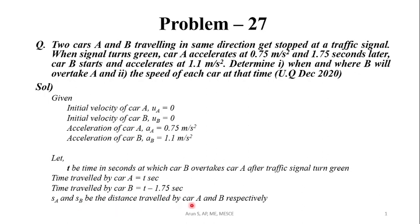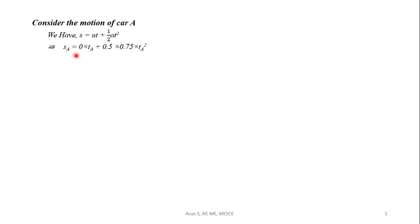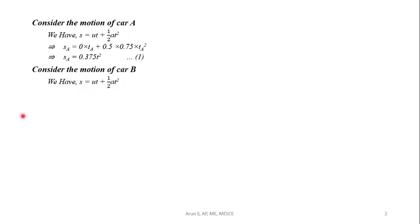Let S_A and S_B be the distances travelled by car A and car B respectively. For car A, using s = ut + ½at²: S_A = 0 × T + 0.5 × 0.75 × T², which simplifies to S_A = 0.375 T² (equation 1). For car B: S_B = 0 × T_B + 0.5 × 1.1 × T_B², giving S_B = 0.55 × (T − 1.75)² (equation 2).